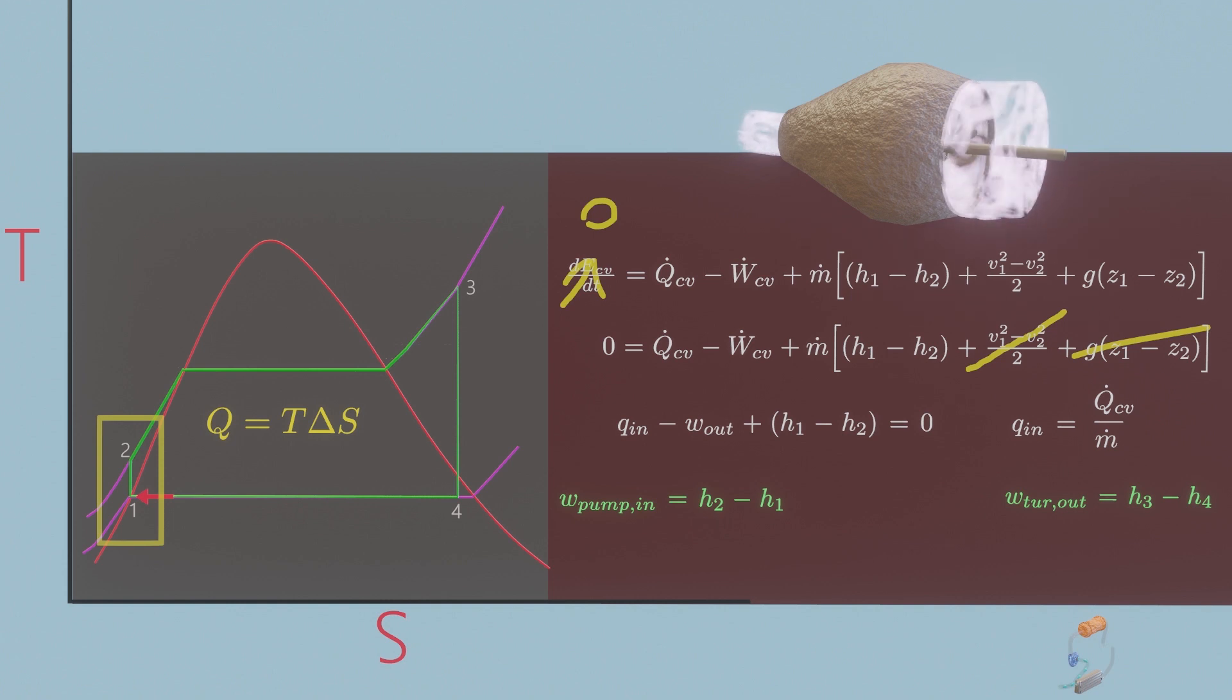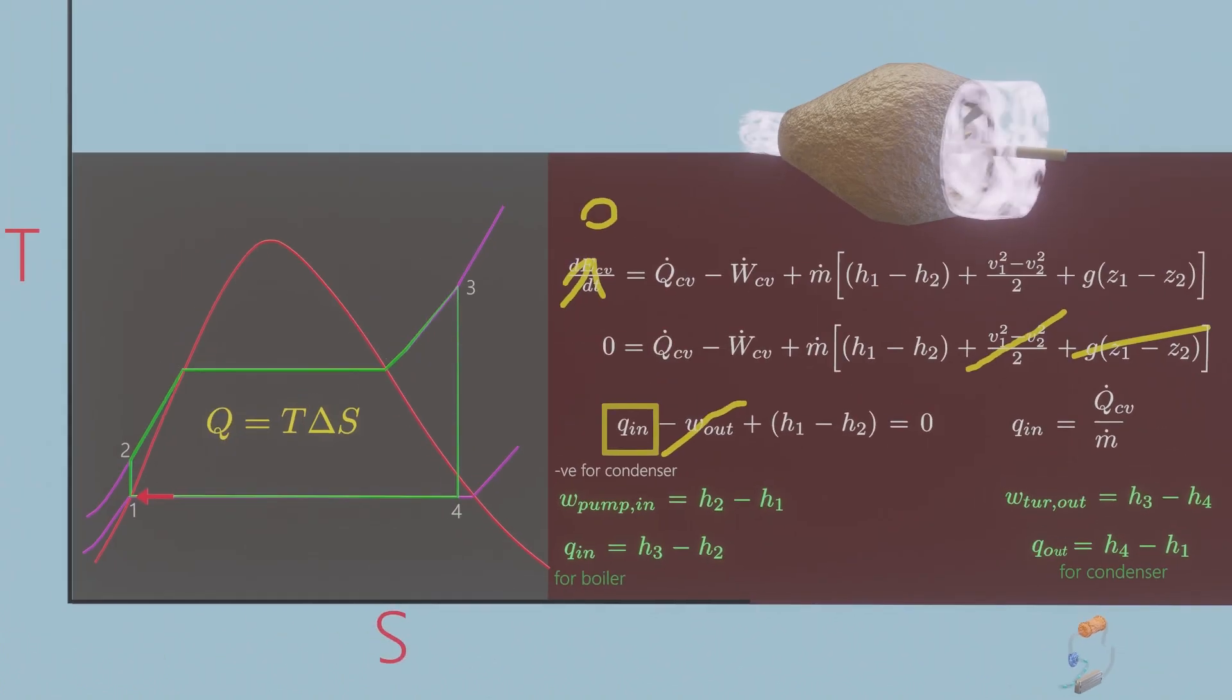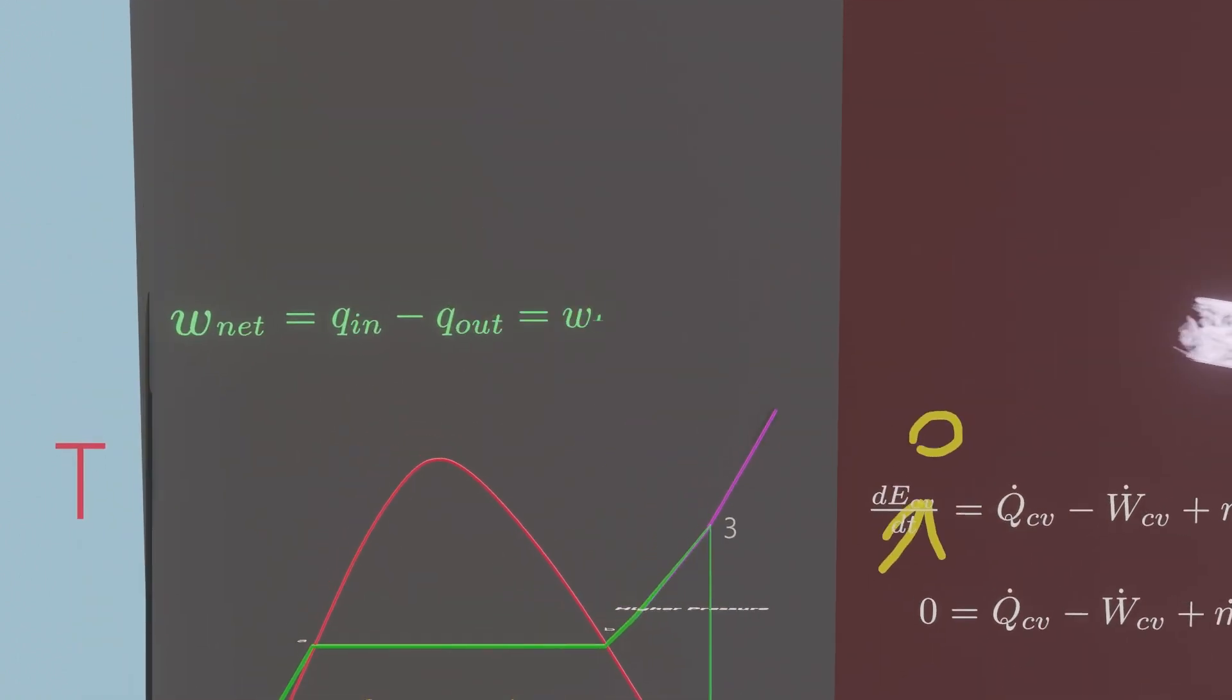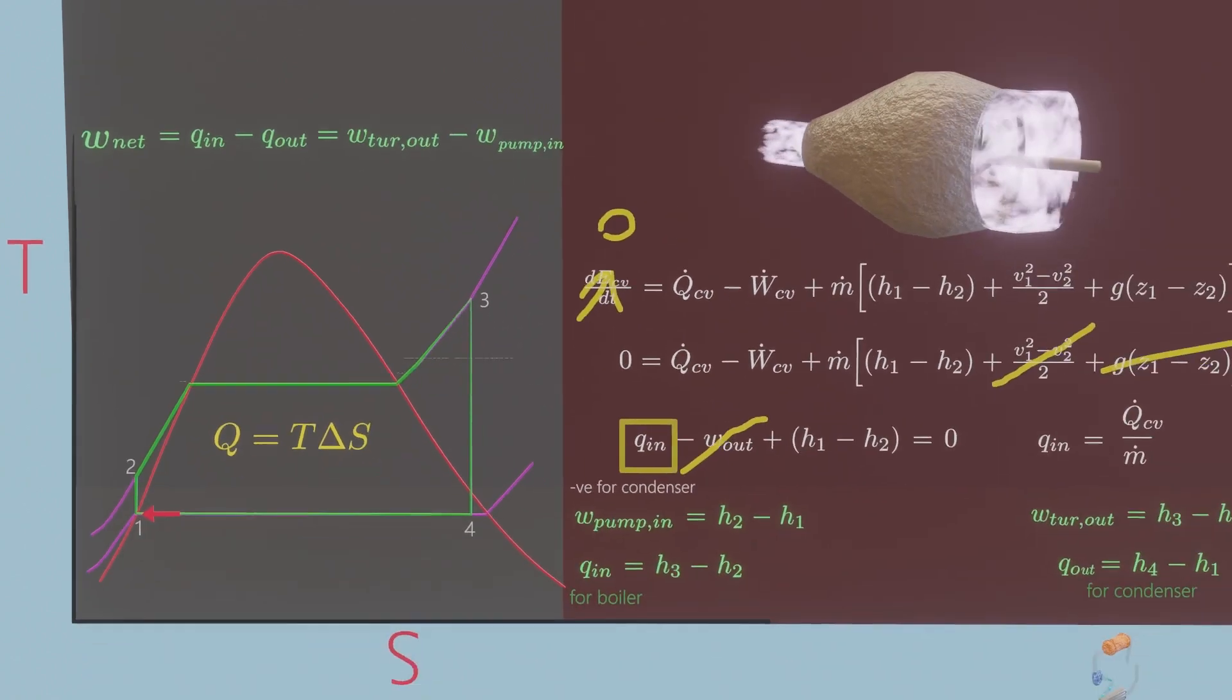Similarly, the boiler and the condenser do not involve any work. Also the heat transfer out of the condenser and this quantity shall be negative. Solving we get the net work done during the cyclic processes. Finally, the thermal efficiency of the Rankine cycle is determined from this equation.